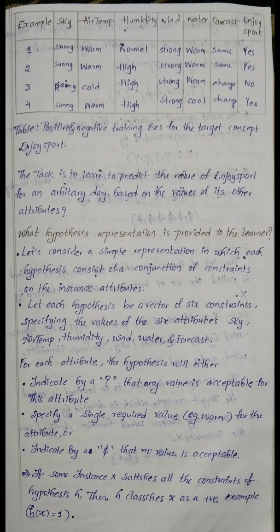For an arbitrary day, the attributes are: sunny, warm, normal, strong, warm, same. This arbitrary day is classified based on the values of its other attributes.